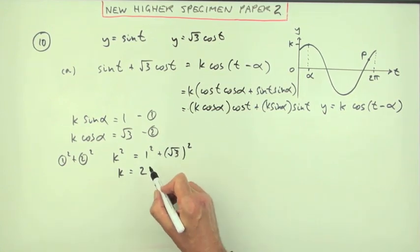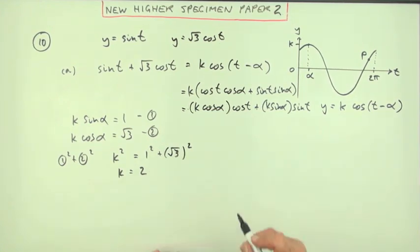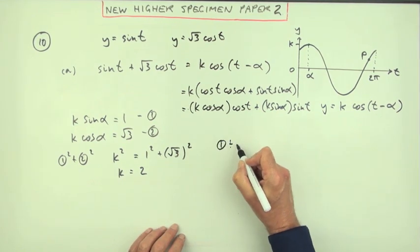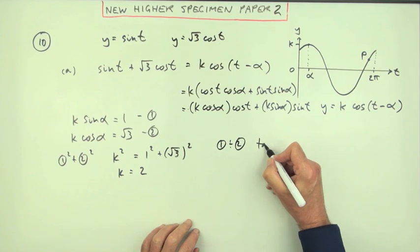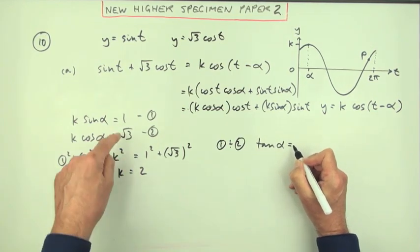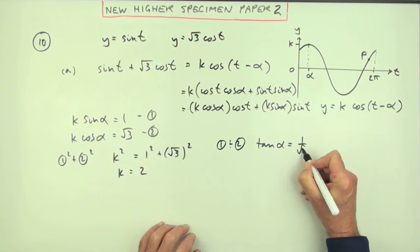Because I've got a 1, 2, root 3 triangle. And if you do 1 divided by 2, the k's will cancel, and you'll have sine over cos makes tan. So the tan of alpha will be 1 over root 3.